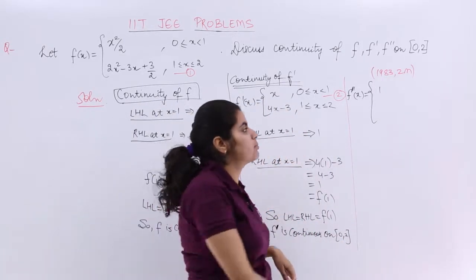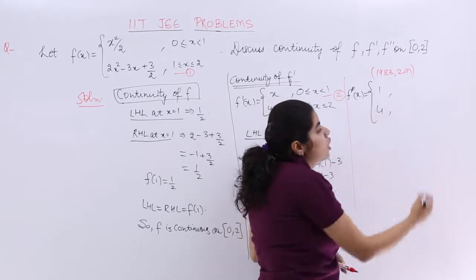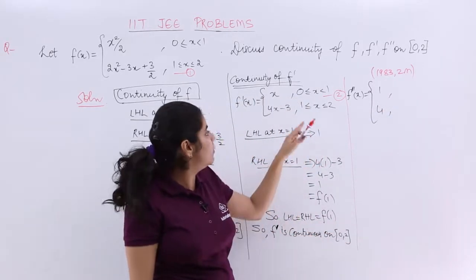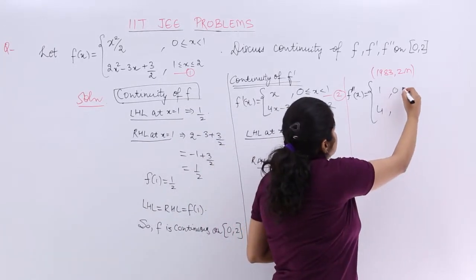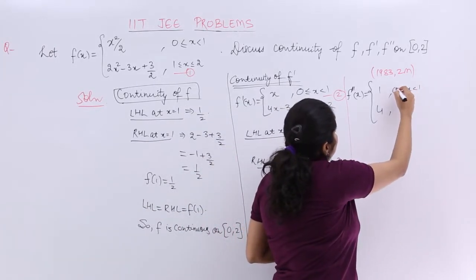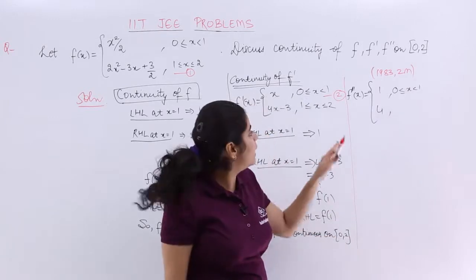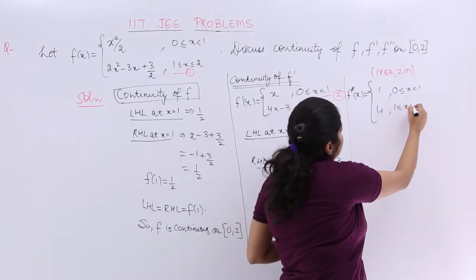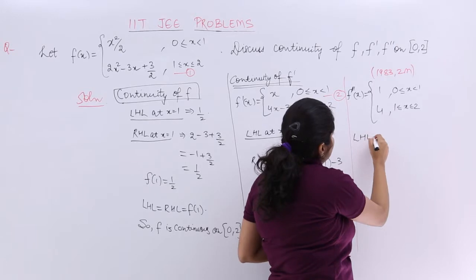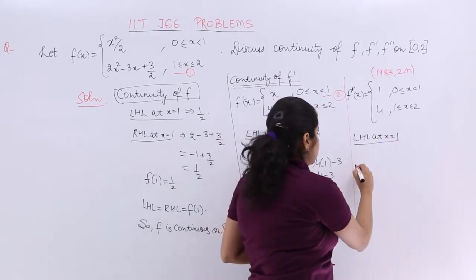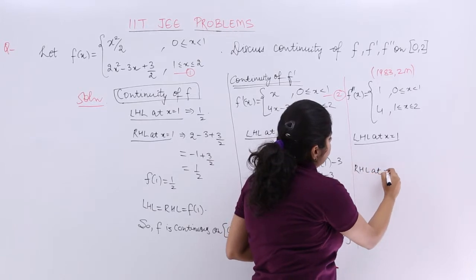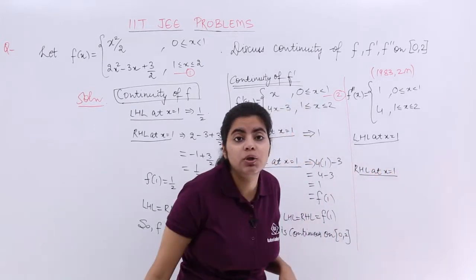Here differentiation of 4x - 3 gives me 4 because with respect to the variable x, minus 3 has no existence in case of differentiation. So again it is [0,1), and again here it is [1,2]. Let's talk about the LHL at x equals 1. Let's again talk about the RHL at x equals 1 and let's talk whether they are equal or not.